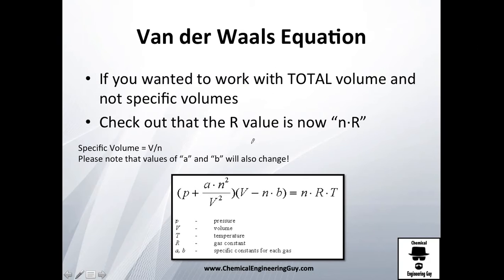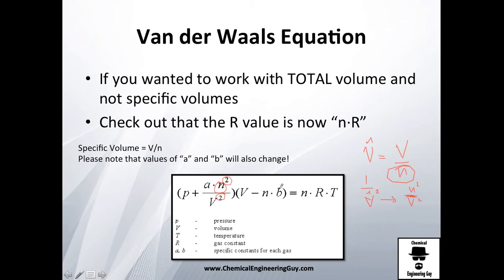I recommend working with specific volumes rather than total moles, but if you want to use moles directly in the equation, you can. When you use total volume instead of specific volume, you get V squared in the pressure correction term and an extra n in the volume correction term. If you do that, make sure your values of A and B also reflect that change to keep the dimensional analysis correct.